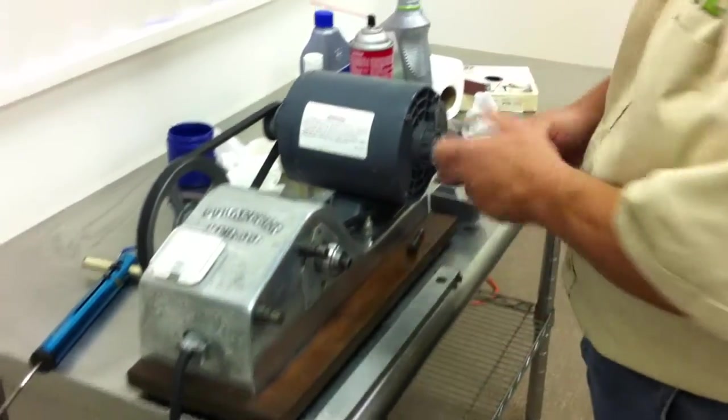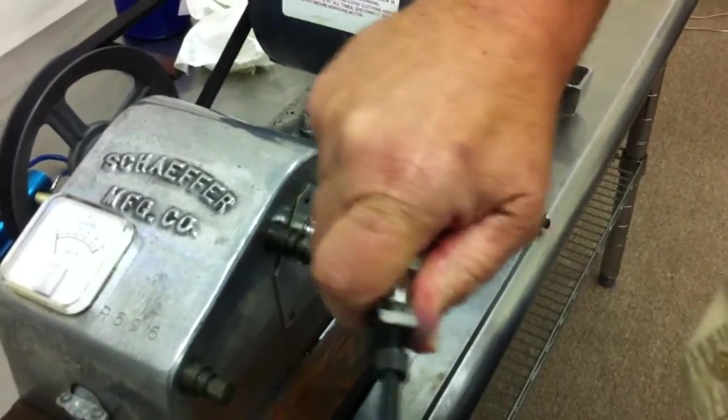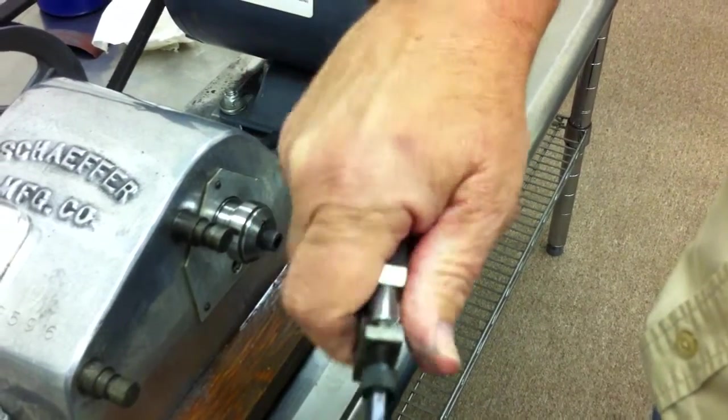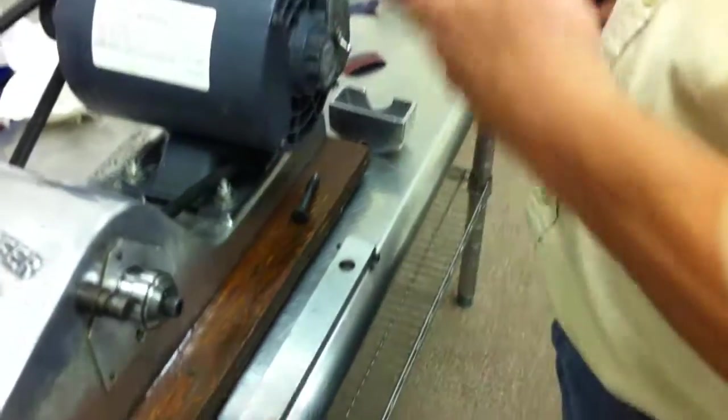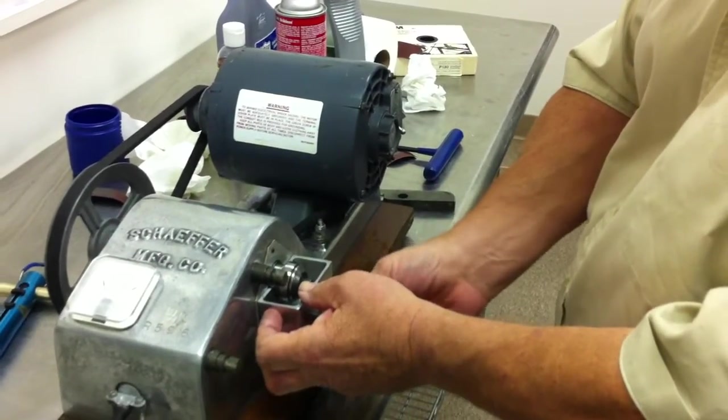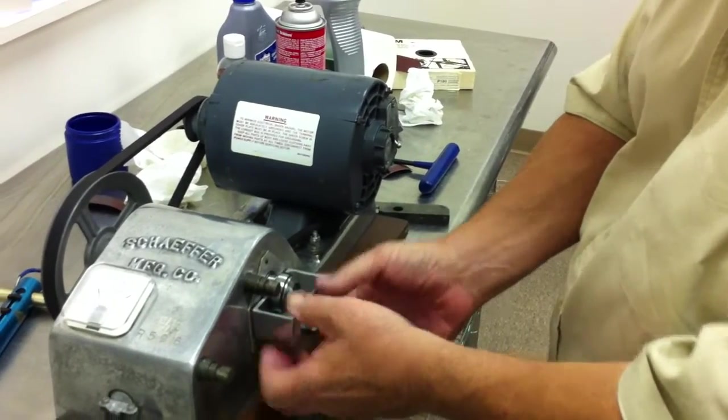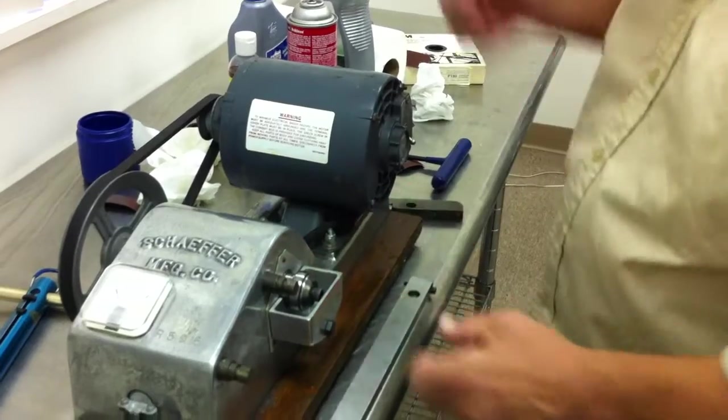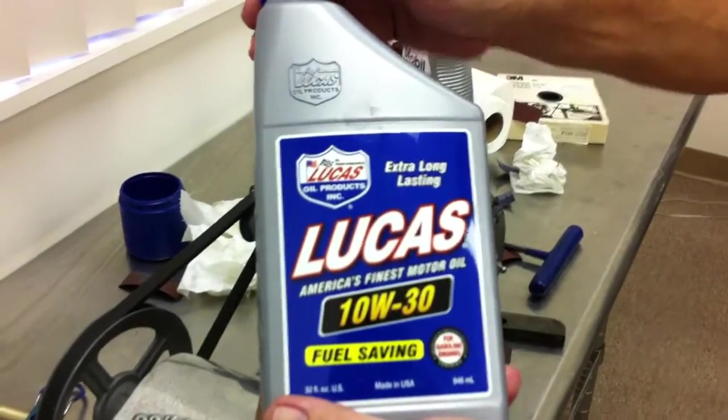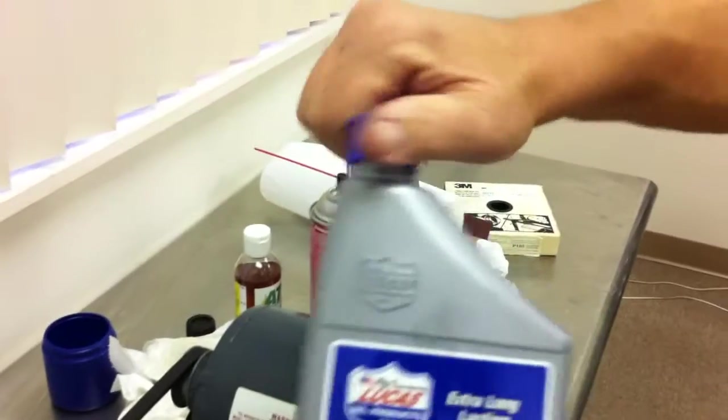We're going to take the bearing from the first test and we're going to loosen it up and we're just going to rotate it to a fresh surface and then lock it back down. Now this time we're going to test the Lucas 10W30. And as you see, it says it's fuel savings, and most oils can claim a fuel savings.